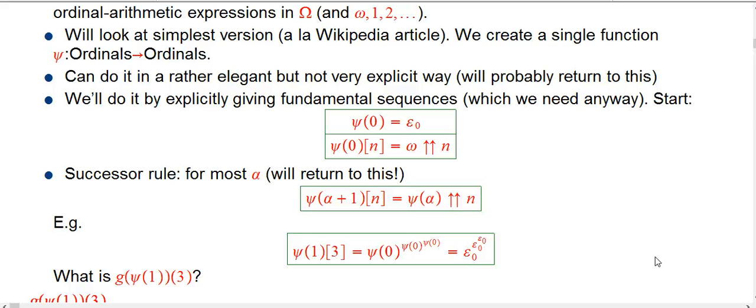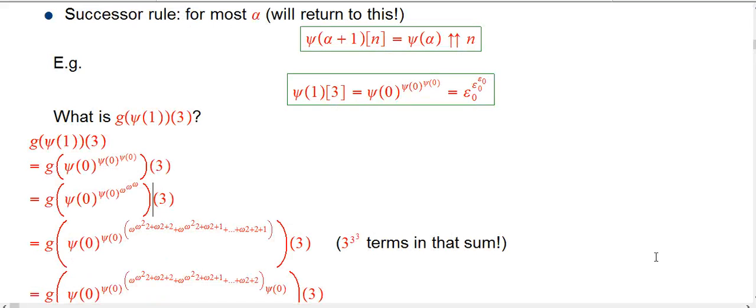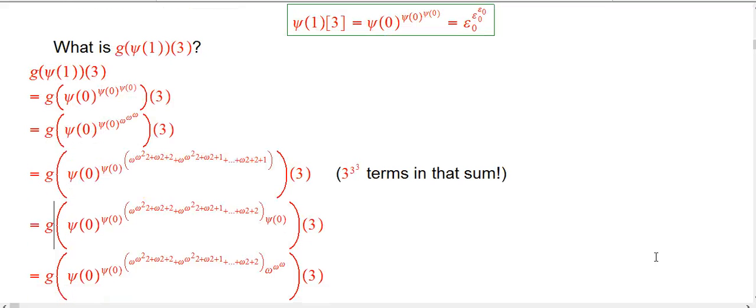I'm not going to focus on f for a while. Let's figure out g(ψ(1))(3). By definition, the fundamental sequence is you exponentiate ψ(0) in a small double up chain with three terms. Whenever you have any exponentiated chain and you want the third term of the fundamental sequence, you put in the fundamental sequence for the top thing in the chain, which by definition is ω^ω^ω. This is still very much a limit ordinal.